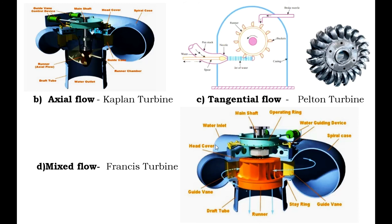From the outer periphery of the runner, water flows inward through the moving blades and discharges at the center of the runner at low pressure. During its flow over the moving blades, water imparts kinetic energy to the runner, causing its rotation. The draft tube is a diverging conical tube fitted at the center of the runner, enabling discharge of water at low pressure. The other end of the draft tube is immersed in the discharge side of the water, called the tailrace.